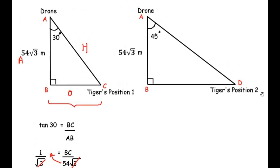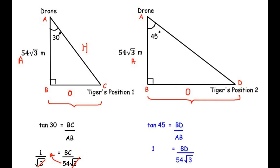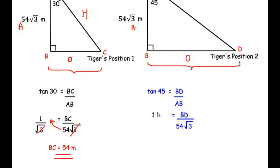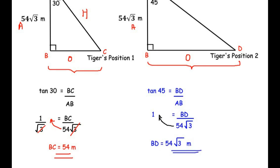For tiger's position 2, with angle of depression 45 degrees: the side opposite to 45 degrees is BD, and the adjacent side is AB = 54√3. Tan(45°) = BD / AB, so 1 = BD / 54√3. Cross-multiplying: BD = 54√3 meters. Now we have BC = 54 meters and BD = 54√3 meters.